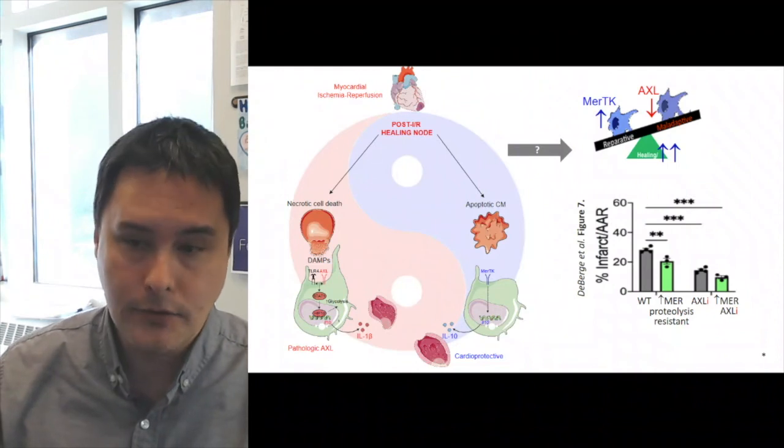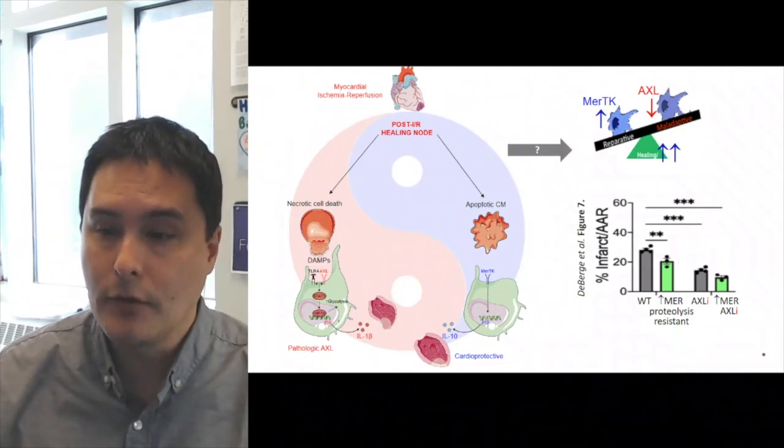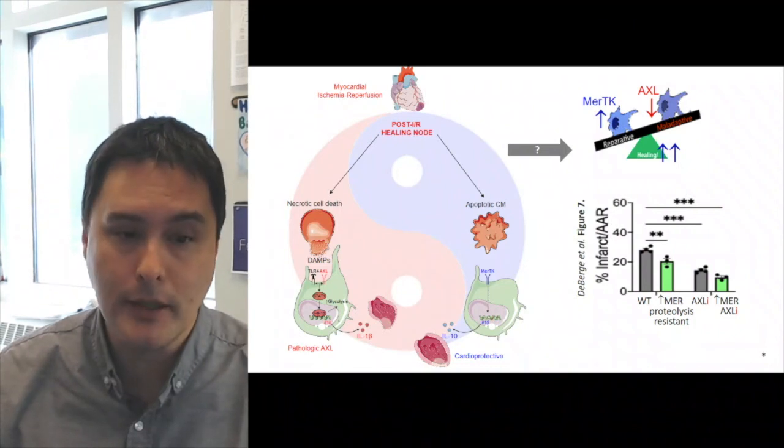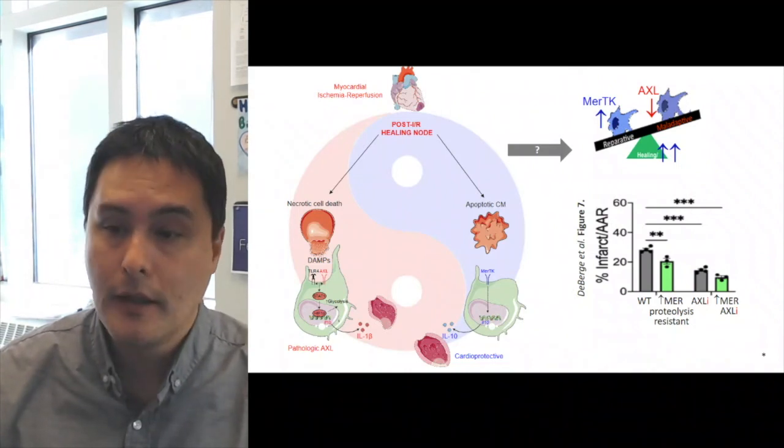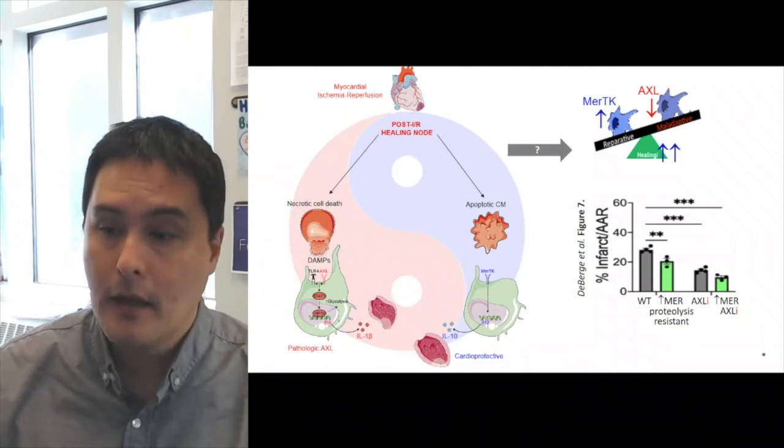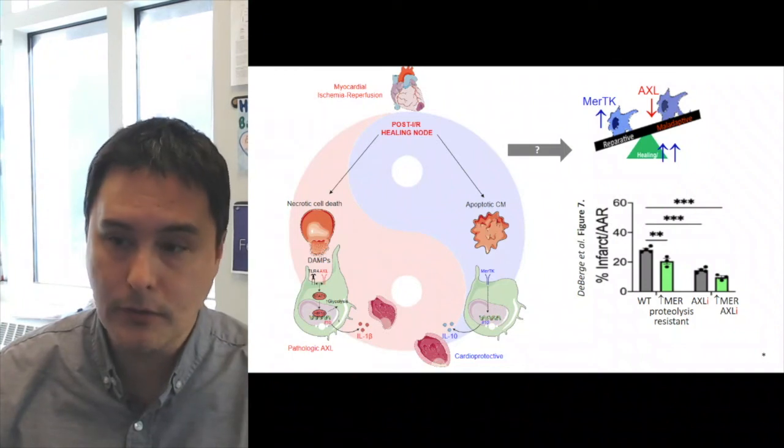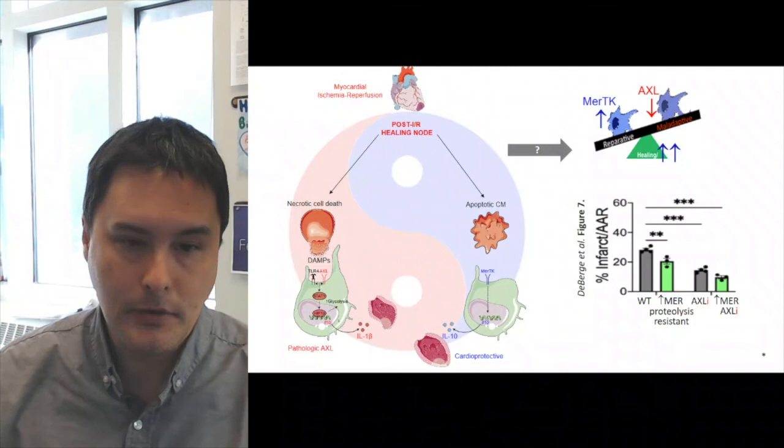And indeed, in figure seven of Matt's publication, that's exactly what he finds. For example, if you measure the infarct size in wild-type mice versus mice in which MERTK has been enhanced through a proteolysis resistant mutation, he can find indeed the infarct sizes are reduced. If he also adds an AXL inhibitor, the infarct sizes are even more reduced. And then if he combines increased or enhanced MERTK and reduced AXL in the very right, this is when Matt sees the smallest infarct sizes.